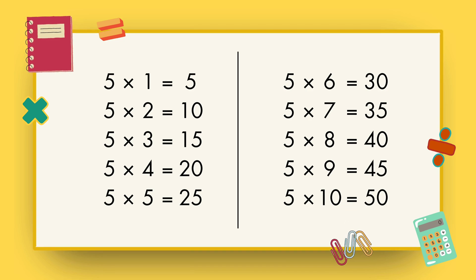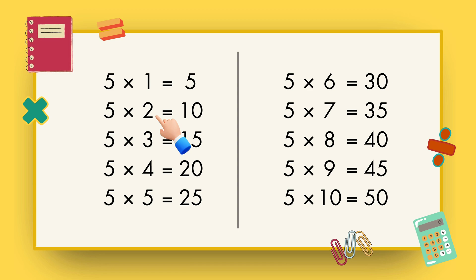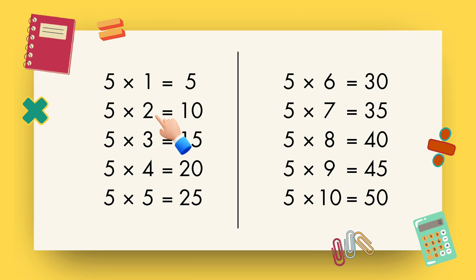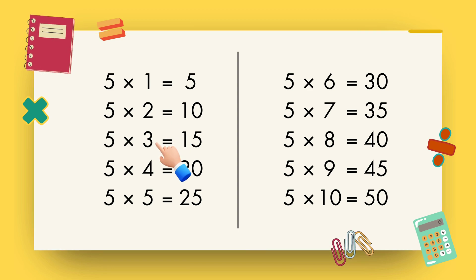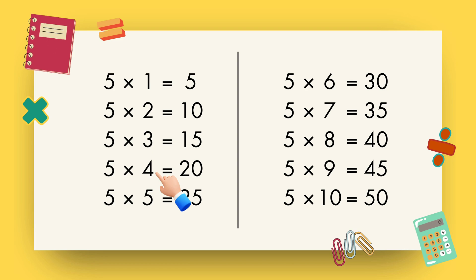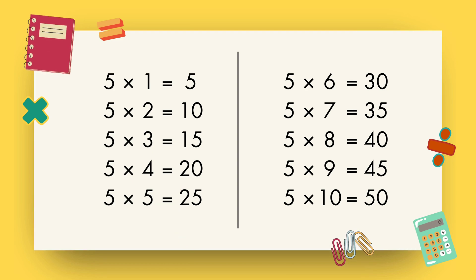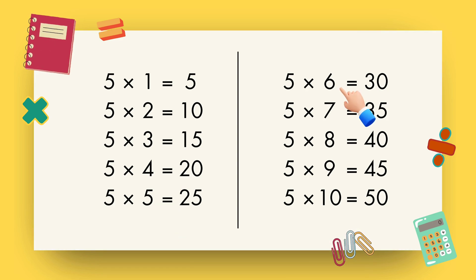Let's repeat. 5 1s are 5, 5 2s are 10, 5 3s are 15, 5 4s are 20, 5 5s are 25, 5 6s are 30.